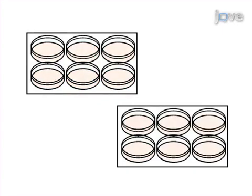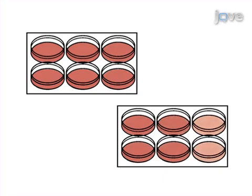Next, aspirate the inoculum and overlay with a 1 to 1 ratio of C-plac agarose and 2x MEM, and incubate the plates for 48 hours in a tissue culture incubator. The final step is to overlay with neutral red staining solution and incubate the plates for one to three hours in a tissue culture incubator.